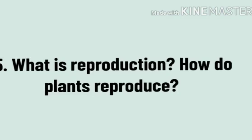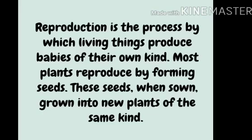Question number 5: What is reproduction? How do plants reproduce? Answer: Reproduction is the process by which living things produce babies of their own kind. Most plants reproduce by forming seeds. These seeds, when sown, grow into new plants of the same kind.